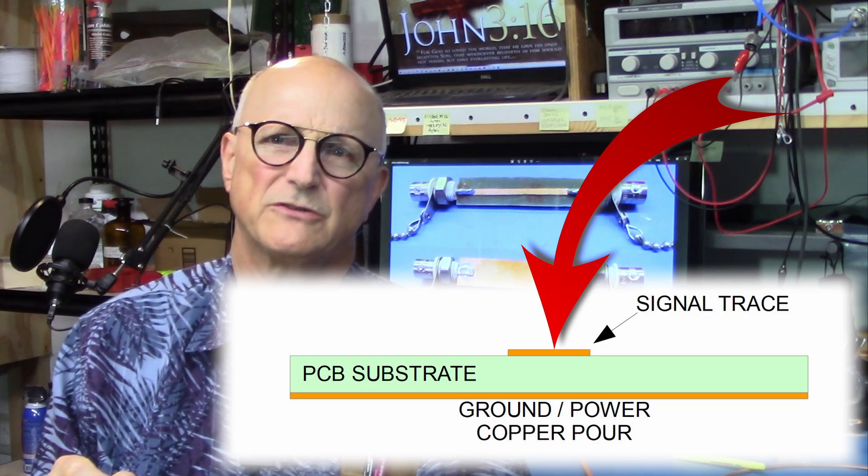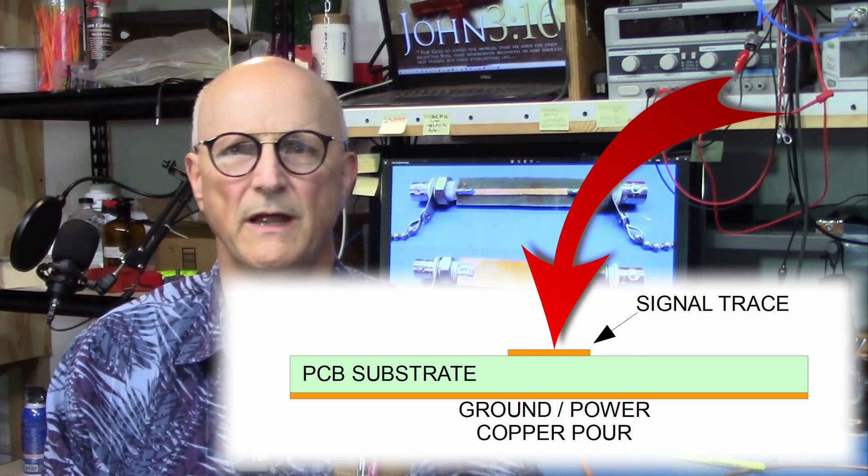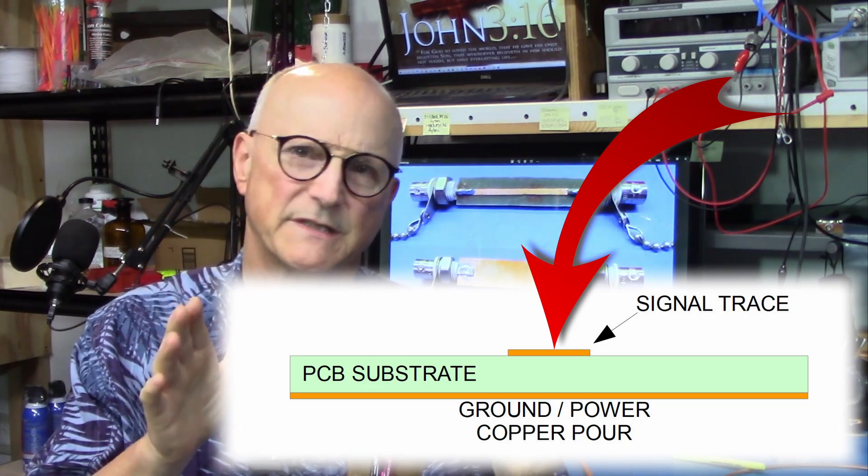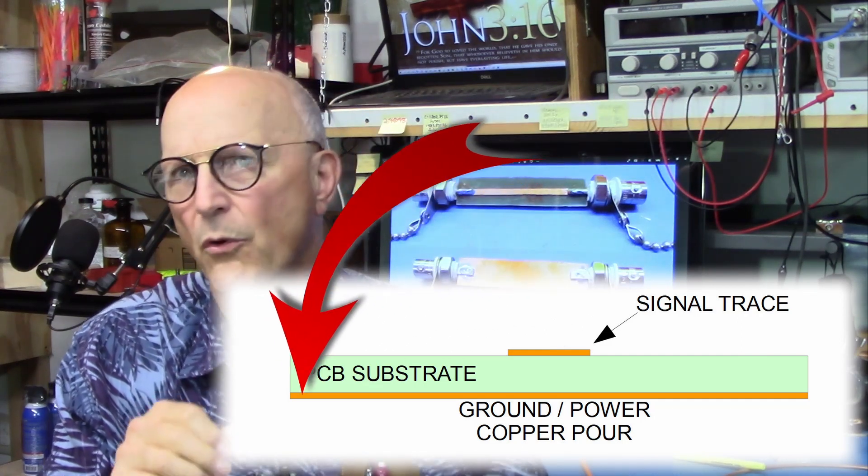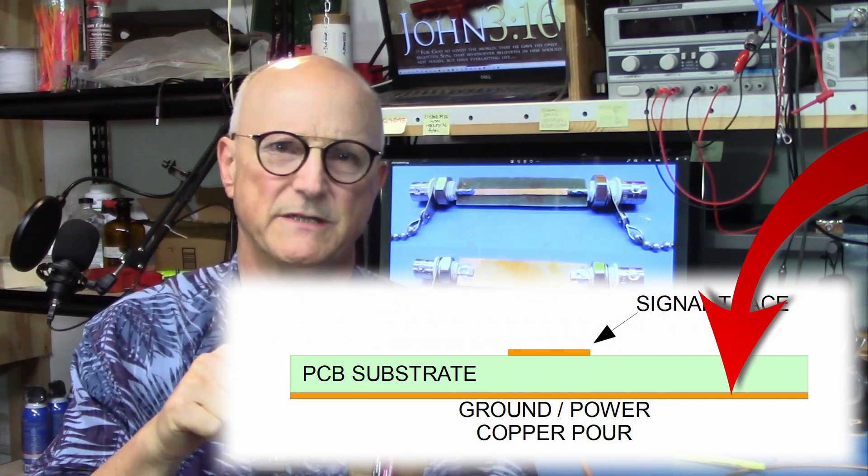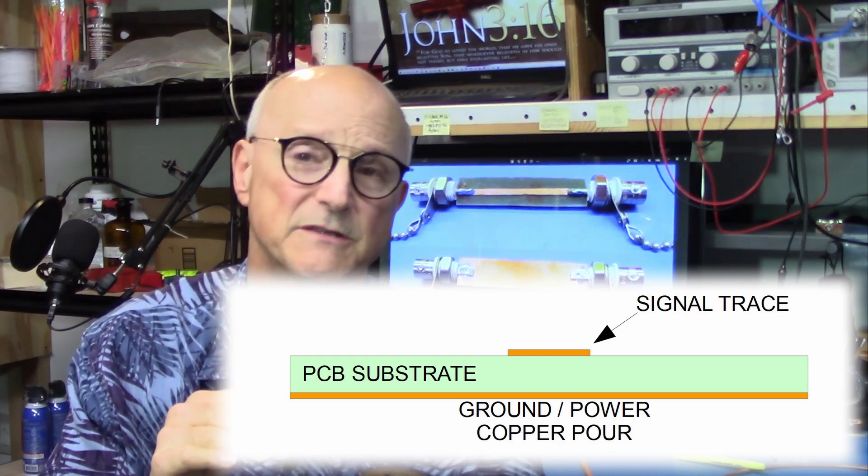What do they look like? A microstrip line consists of a single signal carrying trace on one side of the board with all of the copper a significant distance away from it and a copper pour on the other side of the PCB, which is connected either to a low impedance power source or to ground. The inductance and capacitance associated with the copper of the signal carrying trace and the capacitance associated with the trace and the PCB substrate and the copper pour form a transmission line with a characteristic impedance.